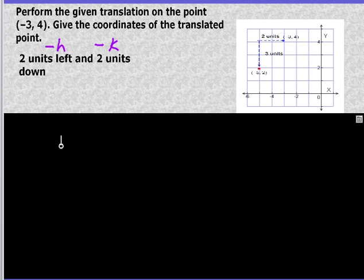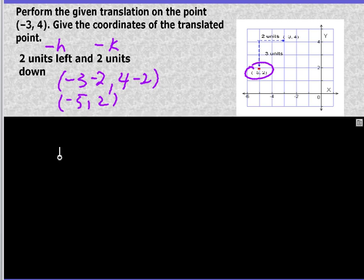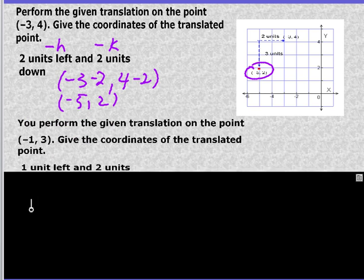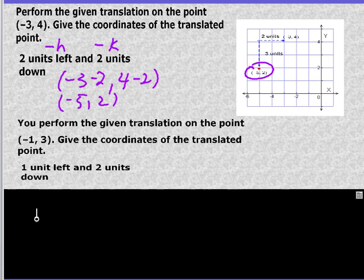So we take -3 and subtract 2. And we take 4 and subtract 2. And that gives us a new coordinate of (-5, 2), which you can see here, but it's really hard to see. I would like you to perform the given translation on the point (-1, 3). One unit left and two units down. This should be pretty straightforward.